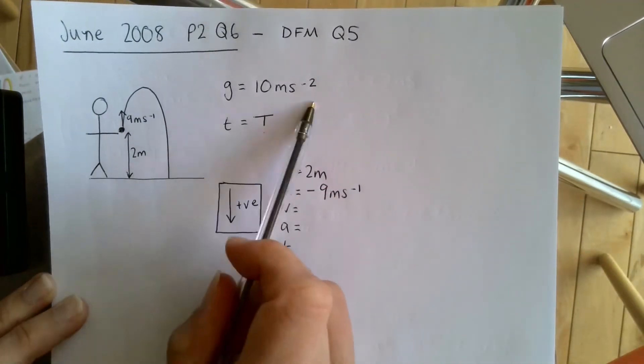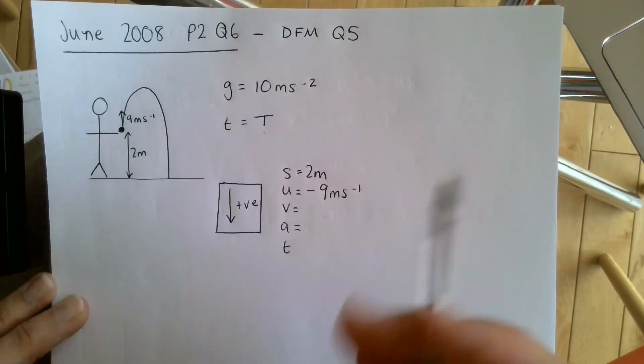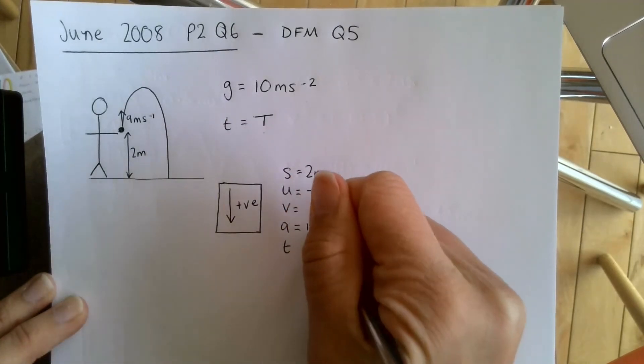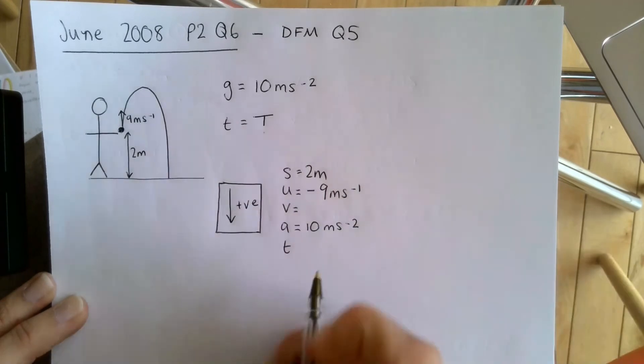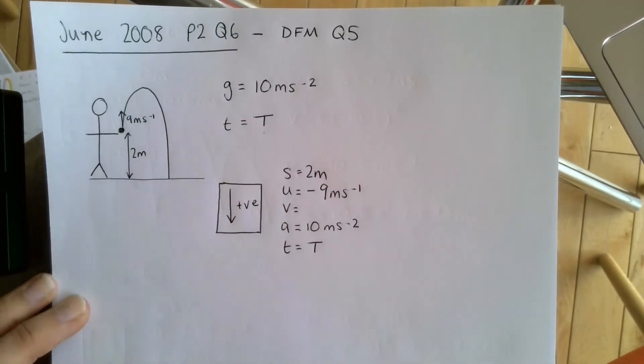A, we know is 10 meters per second squared. We're saying the acceleration due to gravity is 10 meters per second squared, unlike how we normally use 9.8. They've told us to take 10 in the question. And T, which we're trying to work out, I'm going to put here as big T.